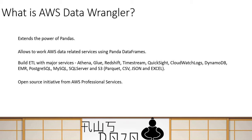Data Wrangler makes it possible for anyone to read data from AWS services into a pandas DataFrame, then naturally use pandas transformation APIs to transform the data, and then finally use Data Wrangler to write the pandas DataFrame data back to AWS services. So people who are very used to working with pandas actually find Data Wrangler very useful to work with AWS services to read, transform, and write back.